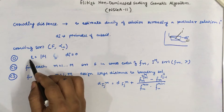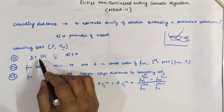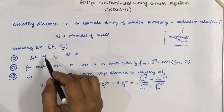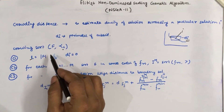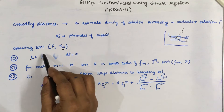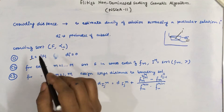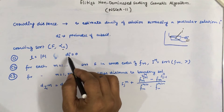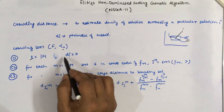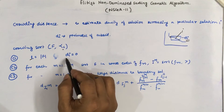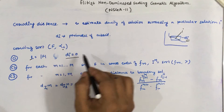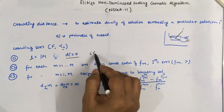The first step is to measure the number of solutions present in the front. L is equal to the size of front F. We also assign the initial crowding distance value of zero for each solution i in F, where i is a solution belonging to F.